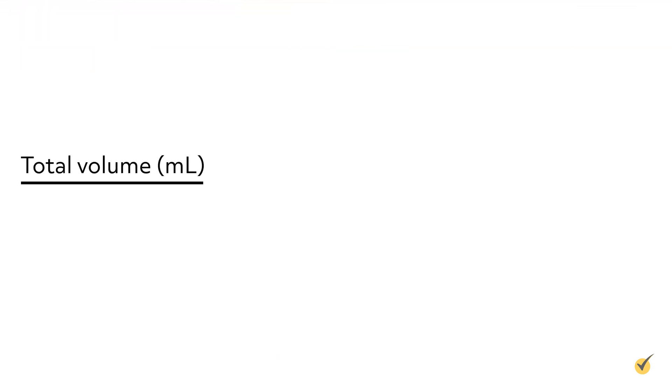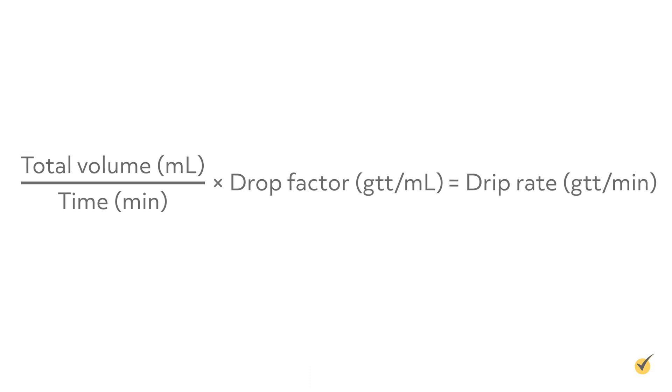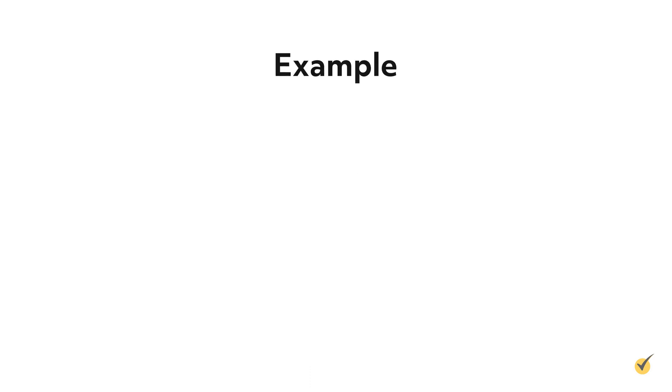To calculate the drip rate, the drop factor is needed. The formula is: total volume in milliliters divided by time in minutes, multiplied by the drop factor in drops per milliliter, which equals the IV drip rate in drops per minute. Let's try an example.